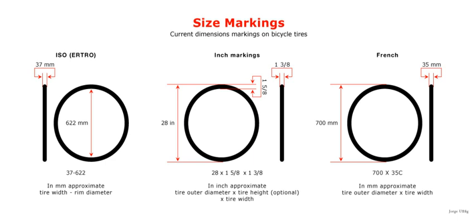584 mm tires are also marketed as 27.5 outer-diameter tires. Older markings of wired-edge tires can be converted to ISO 5775 designations with the help of a conversion table. Such older markings can be appended to the ISO 5775 designation in parentheses.